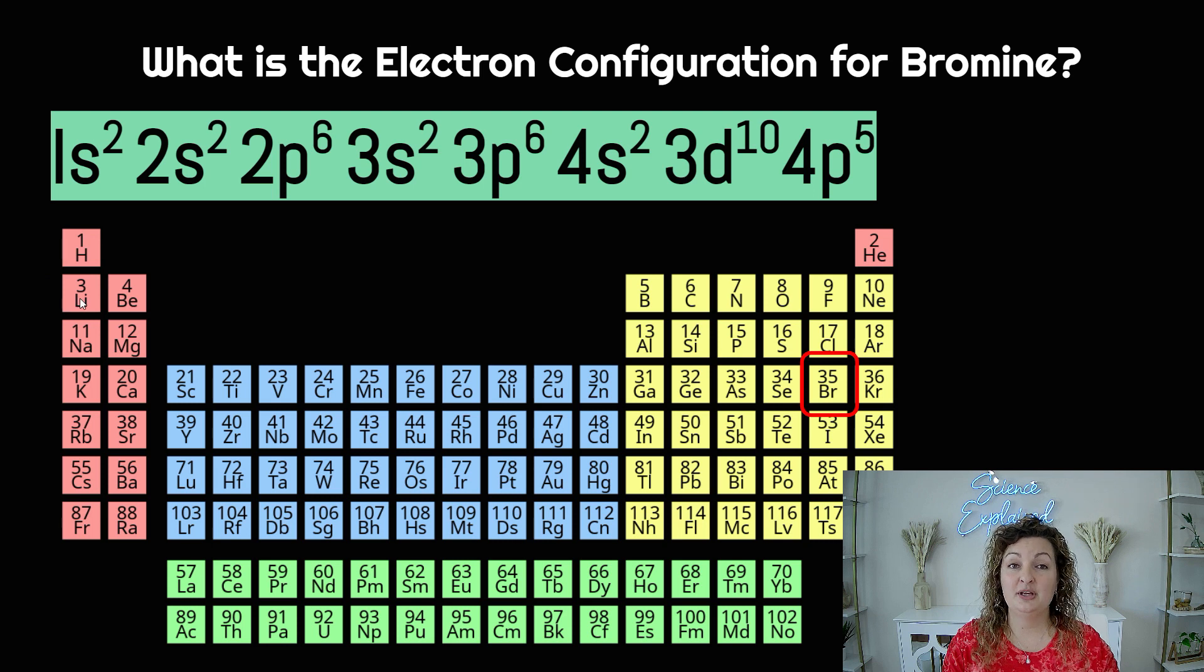We're going to go down to the second period, which is that two out in front. The S block, so S, and then over two. That stands for the two electrons we've gone over.